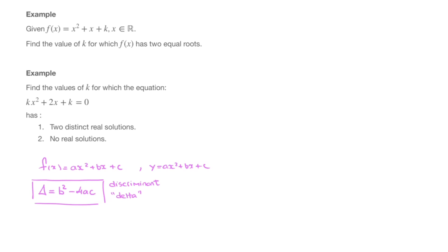For a given quadratic function, when we calculate its value of delta, there are three possibilities. First of all, if delta is positive — in other words, greater than zero — then the quadratic function has two distinct real roots, which we also call zeros. So the function has two distinct, meaning different, real zeros.